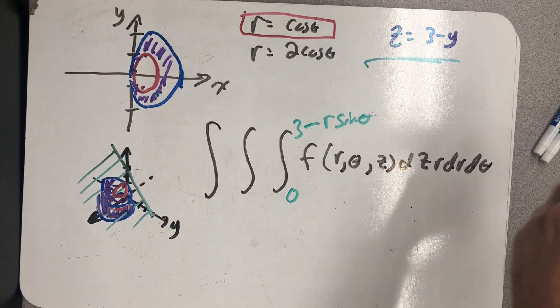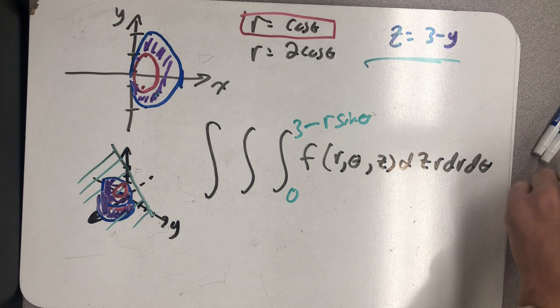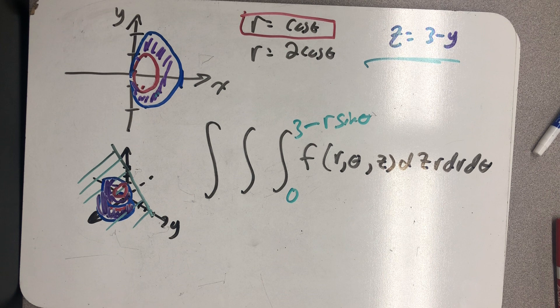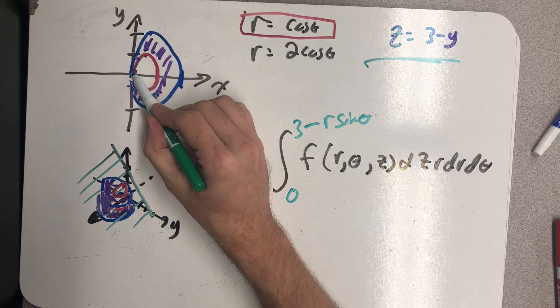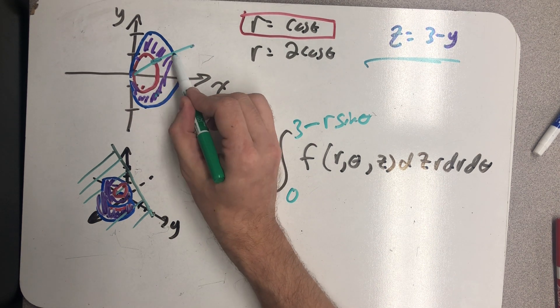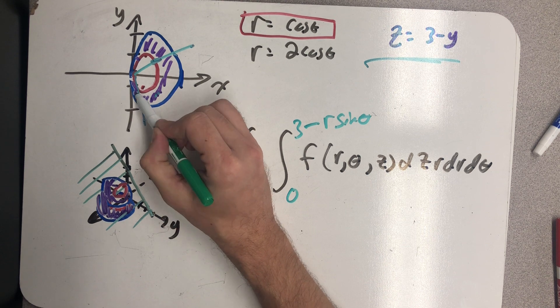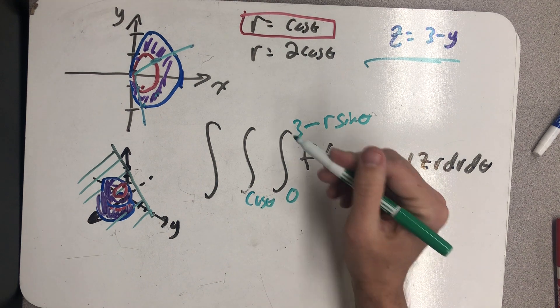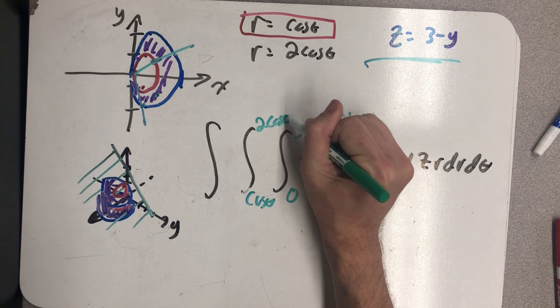For r, now I just need this picture, and that is a good enough picture for this. So I need to draw a ray in increasing direction of r. I'd start at the pole, and I'd hit the red circle, then the blue circle. It doesn't matter where I start. I always hit the red and then the blue. So that's from cosine theta to 2 cosine theta.